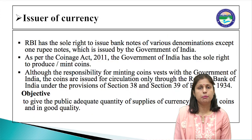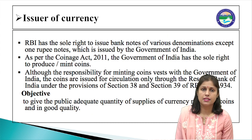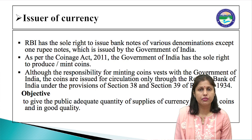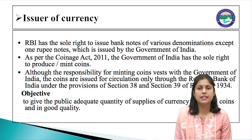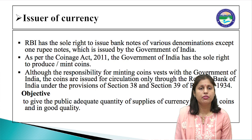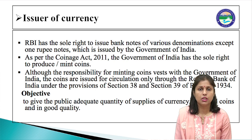The next role RBI plays is as the issuer of currency. RBI has the sole right to issue banknotes of various denominations, except the one rupee note. As per the Coinage Act 2011, the Government of India has the sole right to produce or mint coins. Although the responsibility for minting coins rests with the Government of India, coins are issued for circulation only through the Reserve Bank of India under the provisions of sections 38 and 39 of the RBI Act 1934.